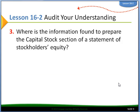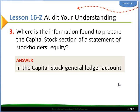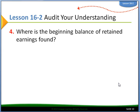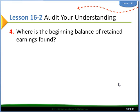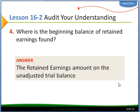Where is the information found to prepare the capital stock section of a statement of stockholders equity? That information is found in the capital stock general ledger account. Where is the beginning balance of retained earnings found? That's in the adjusted trial balance.